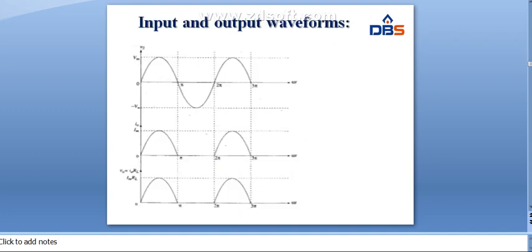Looking at the input and output waveforms: in the positive half cycle, the output waveform is the same as the input. But in the negative half cycle, there is no output. These are the input and output waveforms of the half-wave rectifier.